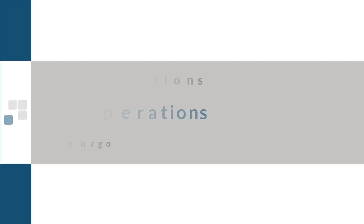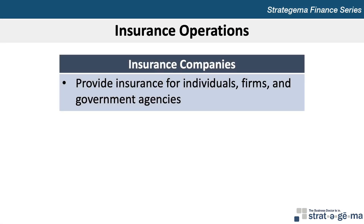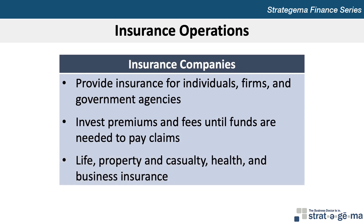This video provides an overview of the major concepts covered in Chapter 25, Insurance Operations. Insurance companies provide insurance for individuals, firms, and government agencies. Insurance companies invest the premiums and fees received from other services until those funds are needed to pay insurance claims. Common types of insurance offered by insurance companies include life insurance, property and casualty insurance, health insurance, and business insurance.